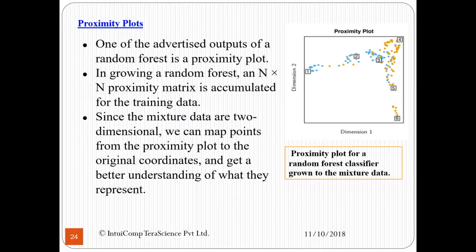Next, we come to proximity plots. One of the advertised outputs of a random forest is a proximity plot. In growing a random forest, an increased proximity matrix is accumulated for the training data. Since the mixture data are two-dimensional, we can map points from the proximity plot to the original coordinates and get a better understanding of what they represent. For your example, a proximity plot for a random forest classifier is given here.